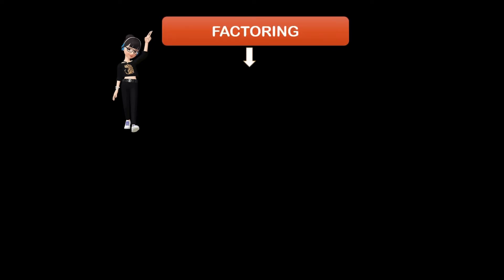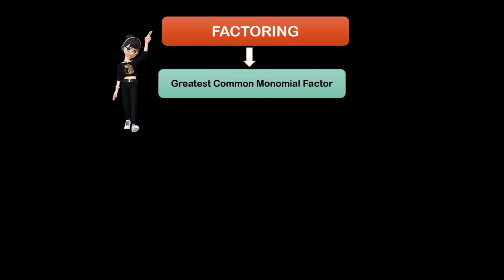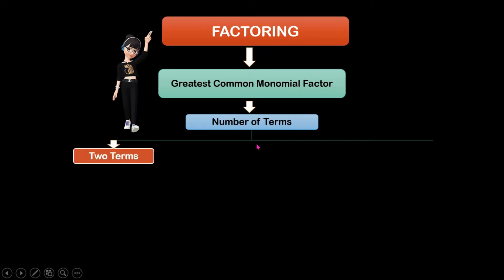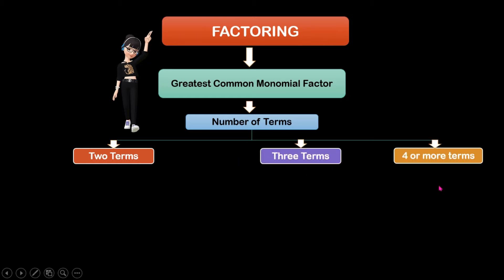So in factoring, we have to remember that the first thing we need to find is if the given has a greatest common monomial factor. After that, we're going to check the number of terms. We have two terms, three terms, and four or more terms.